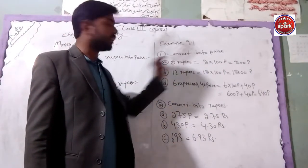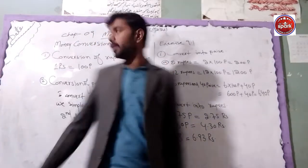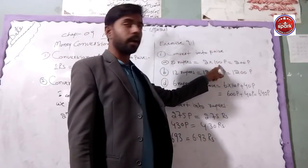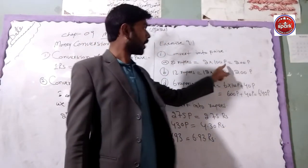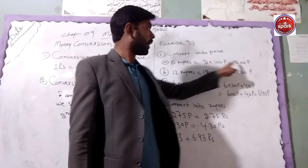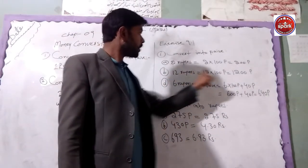We will convert into rupees. For paise to rupees, we will have to multiply by 100. We can multiply the total paise by 100 and the number of rupees will be counted. Then, the total rupees will be counted.